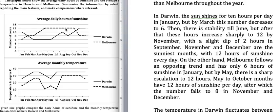Many students write 'the first graph tells us' or 'in the first graph the sun shines.' Writing 'in the first graph' is wrong — it should be 'from the first graph we come to know that.' But even that adds too many words. So I have omitted that altogether and started writing directly about the hours of sunshine in Darwin and Melbourne, because when you mention sunshine, it is automatically understood you are referring to the first graph. If both line graphs showed the same thing, then you would need to specify which graph.